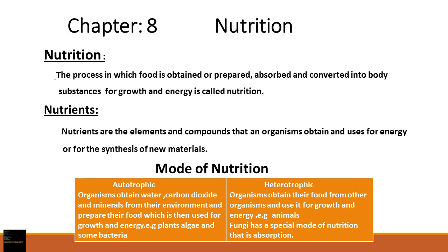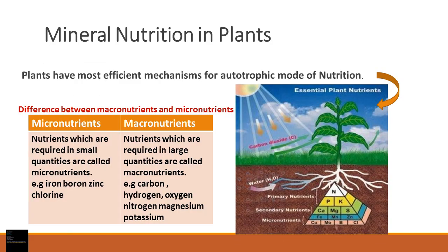In heterotrophic mode of nutrition, organisms cannot make their own food; they obtain food from other organisms — from animals or from plants — and use it for growth and energy. All animals are included in this group. Fungi have a special mode of nutrition called absorption: they do not get food from other organisms nor prepare it themselves. They secrete enzymes onto dead organic matter, digest it, and then absorb the nutrients. This mode of nutrition is known as absorption.